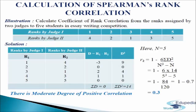Now let us understand the situation when ranks are given with the following illustration. We have to calculate the coefficient of rank correlation from the ranks assigned by two judges to five students in an essay writing competition. For the solution, we will make a table of four columns. In the first column we write r1: 1, 2, 3, 4, and 5. In the second column we write r2: 4, 2, 1, 3, and 5. In the third column we write d = r1 minus r2: minus 3, 0, 2, 1, 0, giving sigma d equals 0. In the fourth column we write d square: 9, 0, 4, 1, 0, giving sigma d square equals 14.